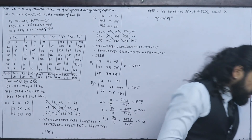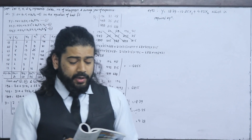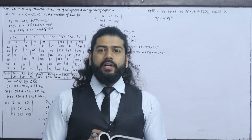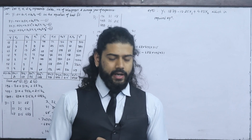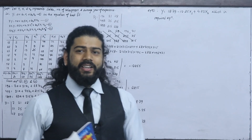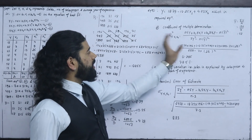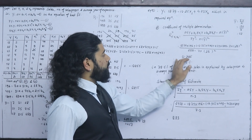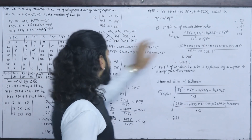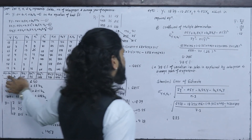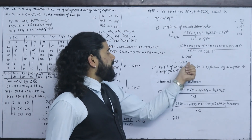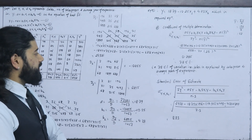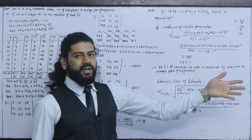Now let's compute the coefficient of multiple determination and interpret the result, and also compute the standard error of estimate and interpret the result. The answer is R-squared equals 0.785. The y-mean is the sum of y: 196 divided by 7 equals 28. So R-squared is 0.785, meaning 78.5 percent of the variation in sales is explained by the number of salespersons and average years of experience.